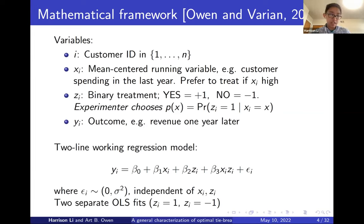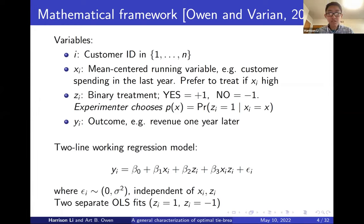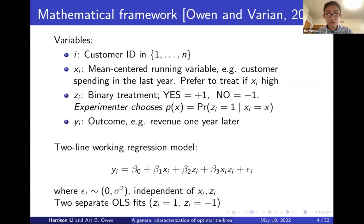The work is under a simple two-line working regression model that amounts to fitting two linear regressions: one for the treated group with zi equals one, and one for the control group with zi equals minus one.